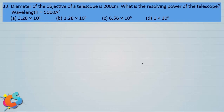Let's take up the next question. The diameter of the objective of a telescope is 200 centimeter. What is the resolving power of the telescope given wavelength of light is 5000 angstrom? Options: a) 3.28 into 10 power 5, b) 3.28 into 10 power 6, c) 6.56 into 10 power 6, and d) 1 into 10 power 6.